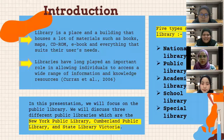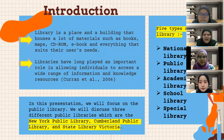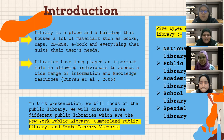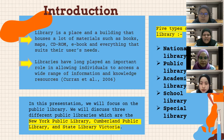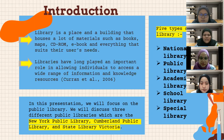For introduction, a library is a place and a building that houses a lot of material such as books, maps, CD-ROM, ebooks, and everything that suits where they are using it. Libraries have long played an important role in allowing individuals to access a wide range of information and knowledge resources. There are five types of library: national library, public library, academic library, school library, and special library.